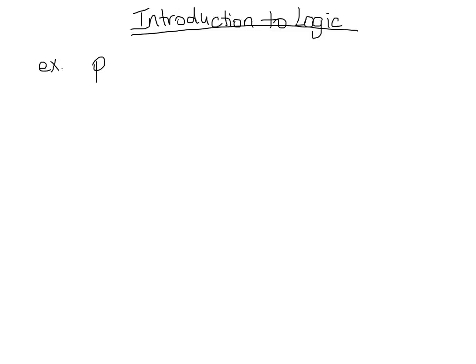In our example we're going to have two statements. We call our statements propositions. My first proposition will be 'it is raining,' and my second proposition will be 'I am wet.' These are just examples, but P and Q — these lowercase letters — are often used to represent propositions.